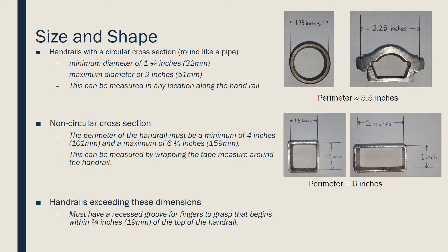The picture on the top left is a common size of pipe used in commercial handrails, and is one and three-quarter inches in diameter. If the cross section is not circular, the perimeter of the handrail must be a minimum of four inches and a maximum of six and a quarter inches, measured by wrapping the tape measure around the handrail. If the handrail exceeds these maximum measurements, it must have a recessed groove for fingers to grasp that begins within three-quarter inches of the top of the handrail. The cross sections shown in the top right and both bottom pictures are examples of non-circular handrails used in commercial buildings and dwelling units.